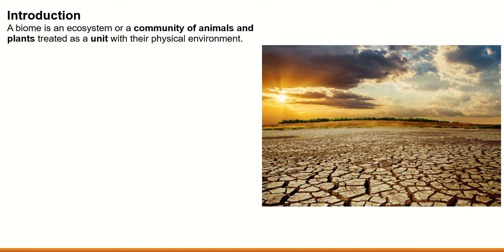Basically, it's an ecosystem of animals and plants who are at one with their environment. That means the plants and animals are adapted specifically to survive in that environment. There's a reason why you'll only find certain plants and animals in certain parts of the world — it's because those plants and animals have adapted to live in their environment. For example, you won't find snakes in Ireland because snakes cannot survive in the ecosystem there.